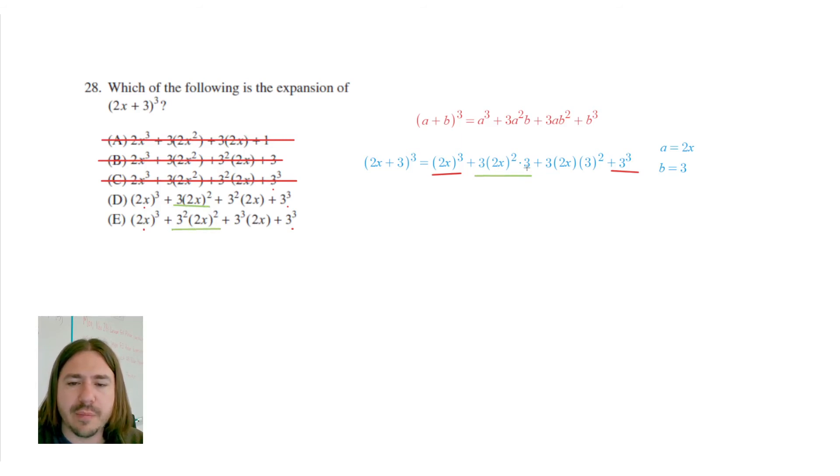The tricky thing about this is the way I've got this written is I've got the 3 that came from the expansion and then the 3 that came from the b. So I do have 3 times 3 here, and that's the one thing that they did simplify here is they